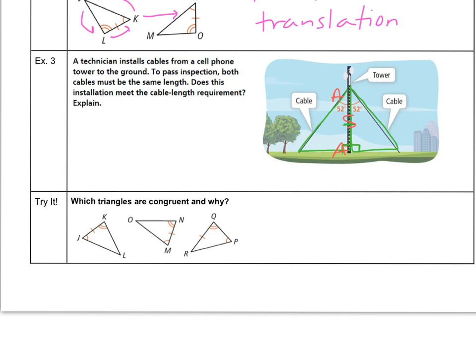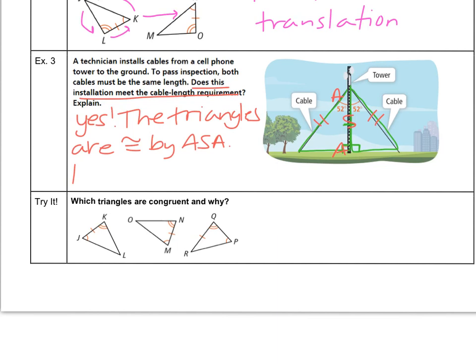That would mean the triangles are congruent because of ASA. So does the installation meet the cable length requirement? The answer is yes. The triangles are congruent because of the angle-side-angle congruence theorem. And the cables are then sides that aren't already marked. So we know the definition that allows us to state corresponding parts are congruent if the triangles are congruent. So we can say then the cables are congruent by our CPCTC. Corresponding parts of congruent triangles are congruent.